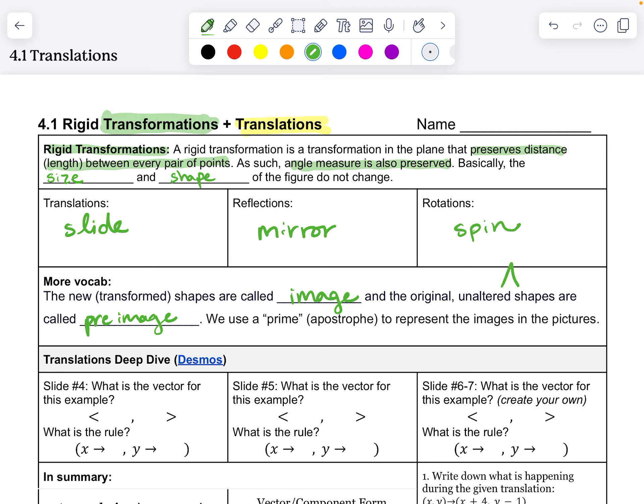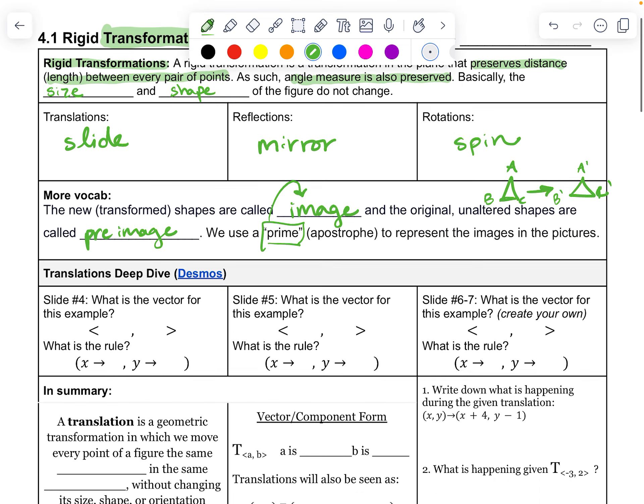So if I have a shape that I scoot over, let's say this is A, B, C, and then the new one is A prime, C prime, and B prime. So prime is the new one. It goes with the image.